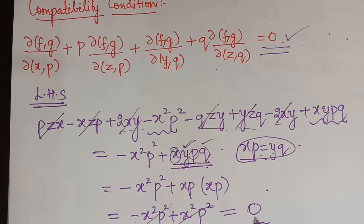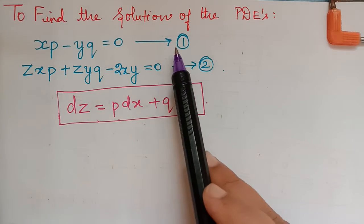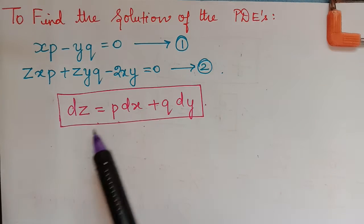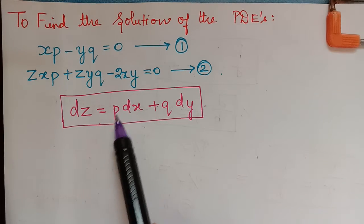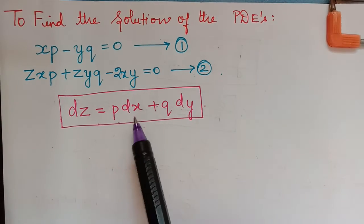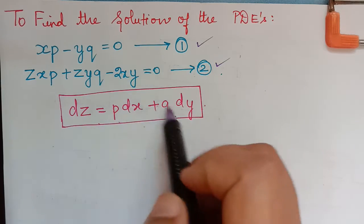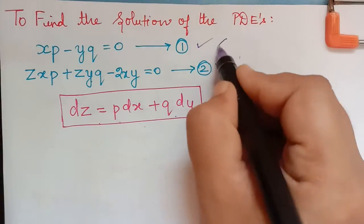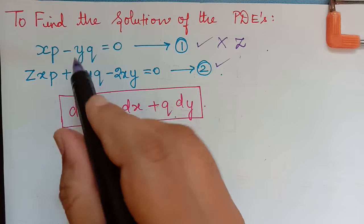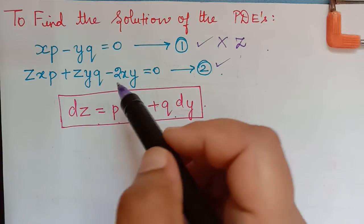Now the second part is to find the solution of the given PDEs. The solution is obtained from dz = p dx + q dy, where we evaluate p and q from the two given equations. We will solve equations 1 and 2 simultaneously to find p and q. To do this, we multiply equation 1 by z so that terms become the same and can be cancelled.